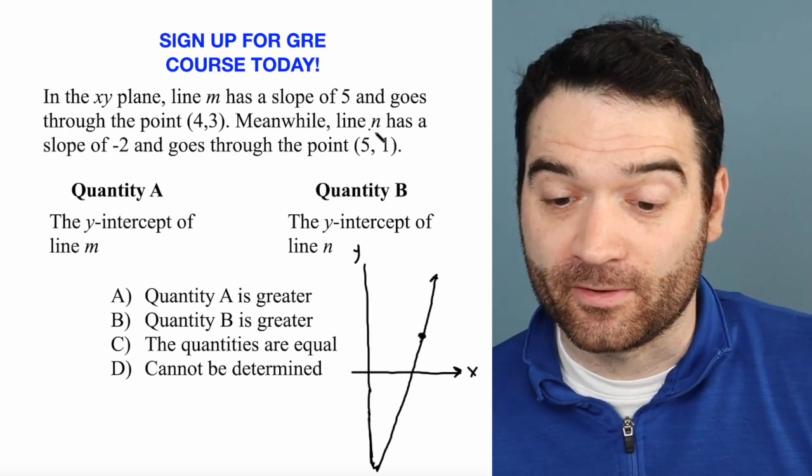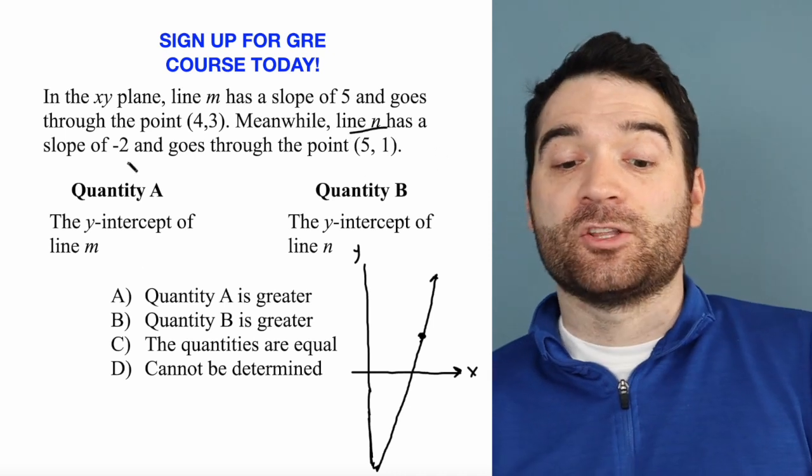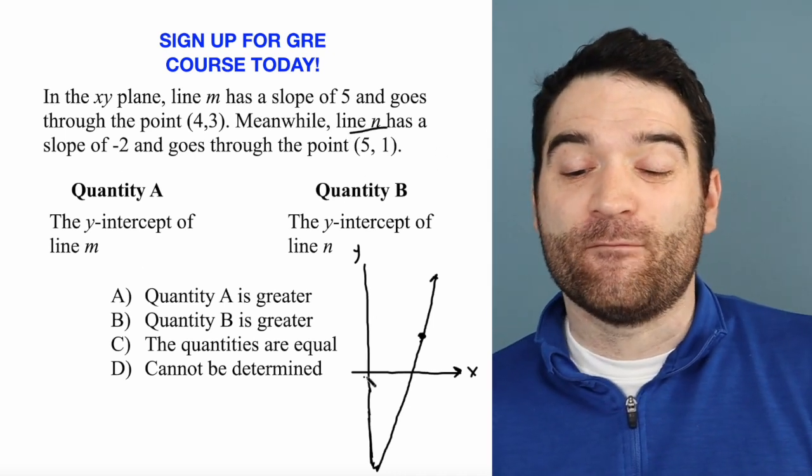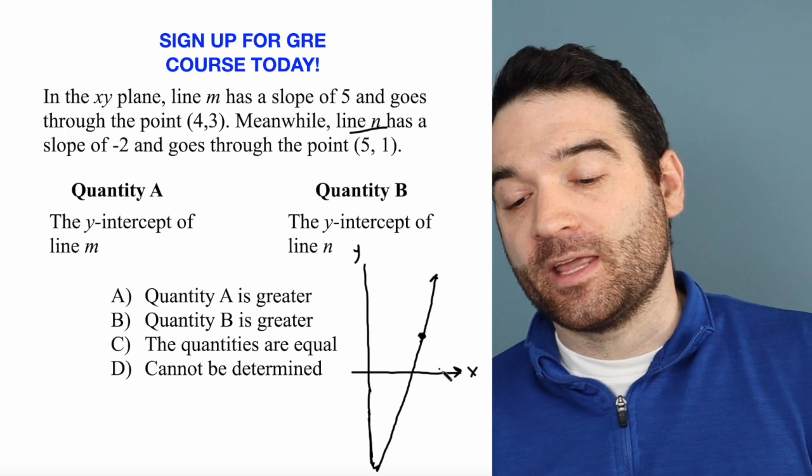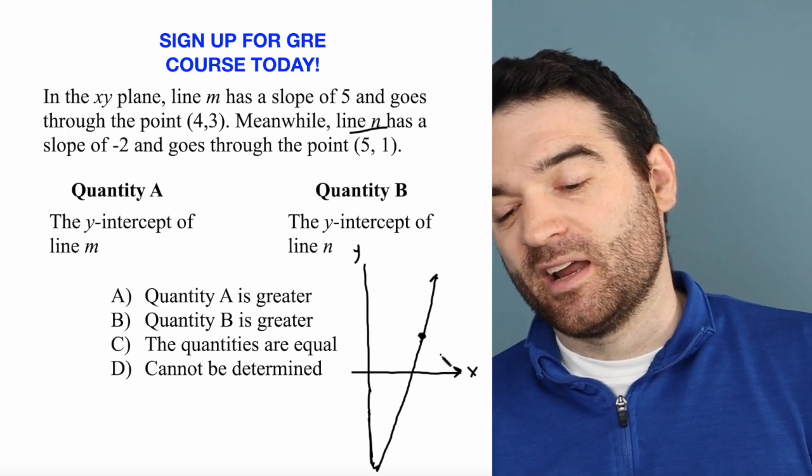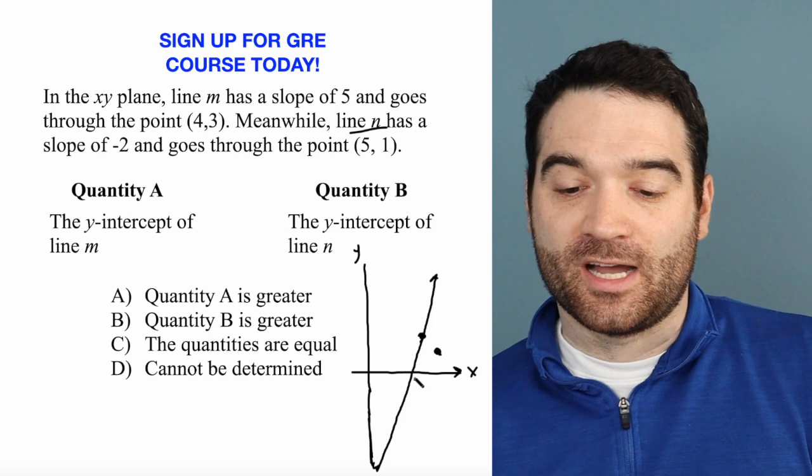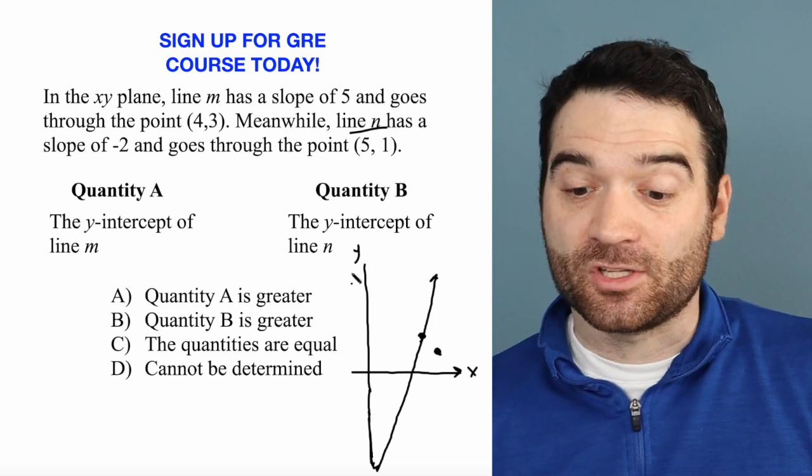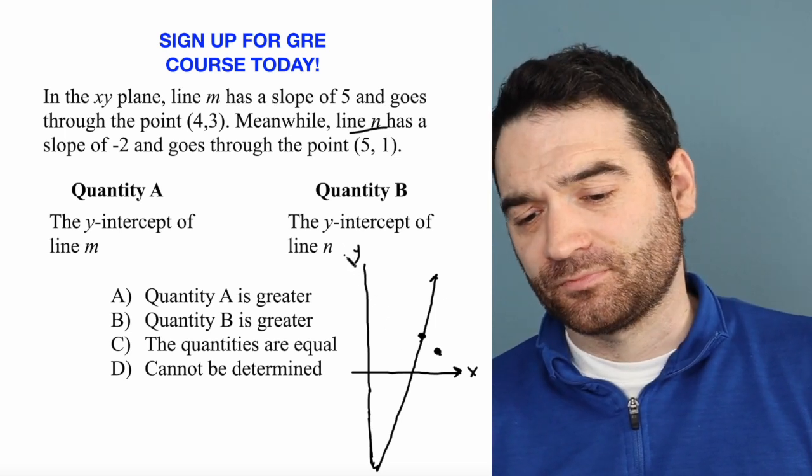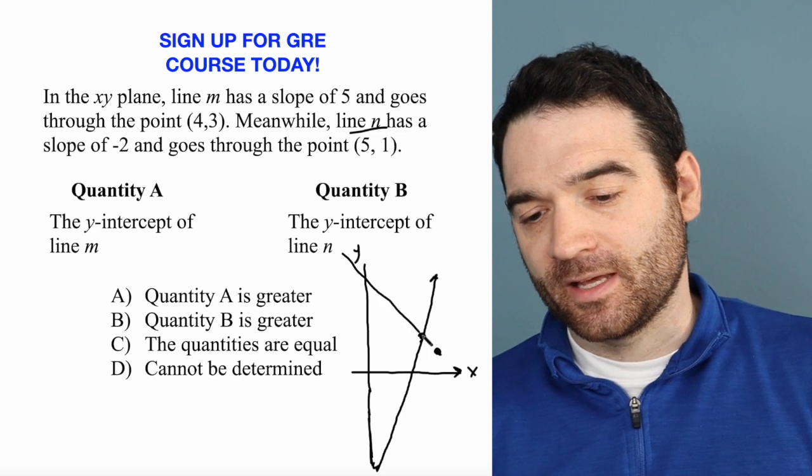Okay, so then we have this other line, line N, that has a slope of -2 and goes through the point (5, 1). Well, if that's (4, 3), (5, 1) is going to be right about there. Again, just eyeballing this. And it's going to have a negative slope, a slope of -2. So, maybe something like this.